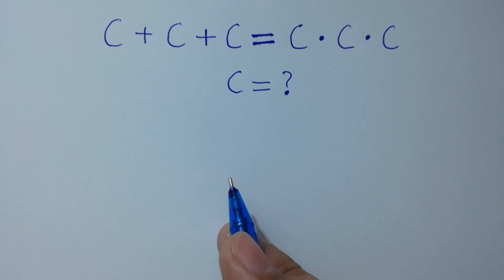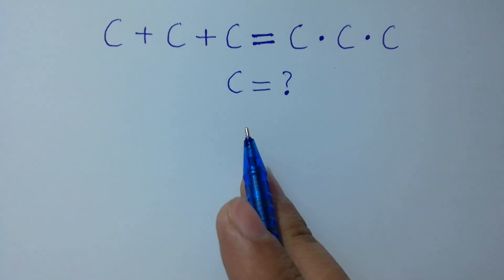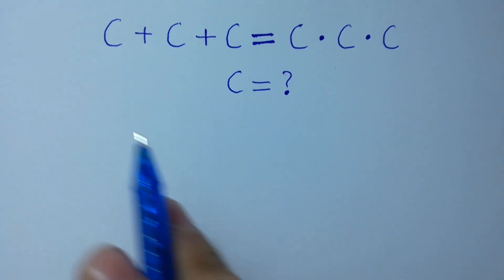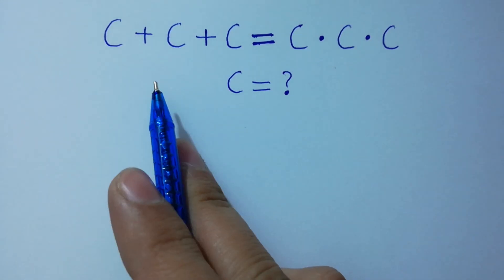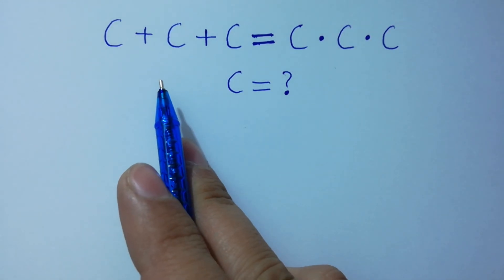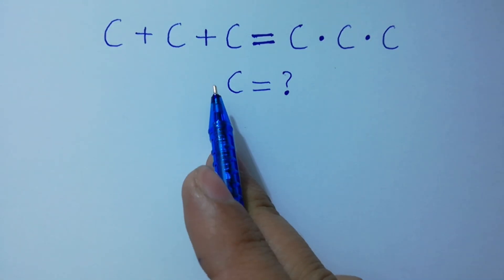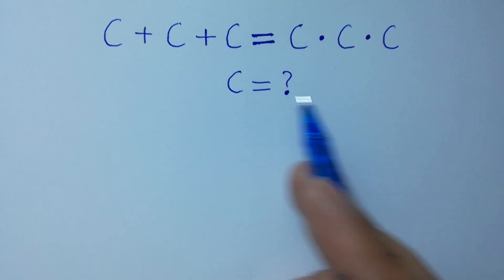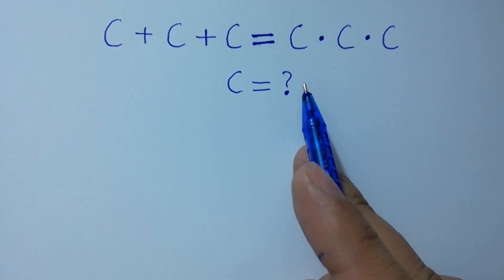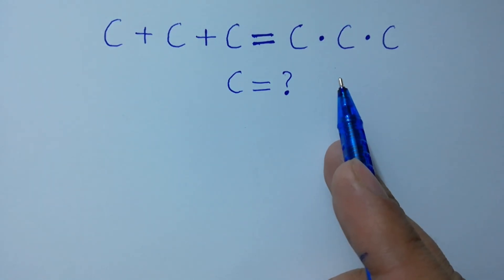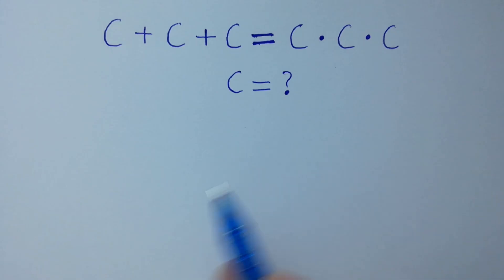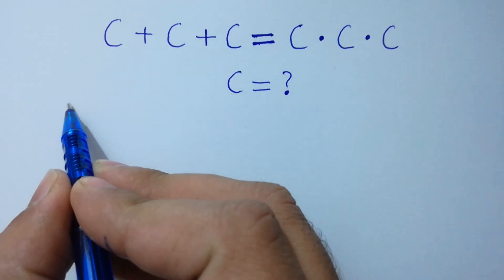Hello friends. Find the value of c if c plus c plus c is equal to c times c times c. Let's have a solution here.